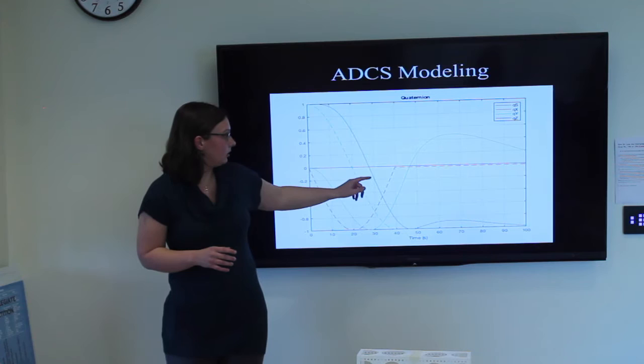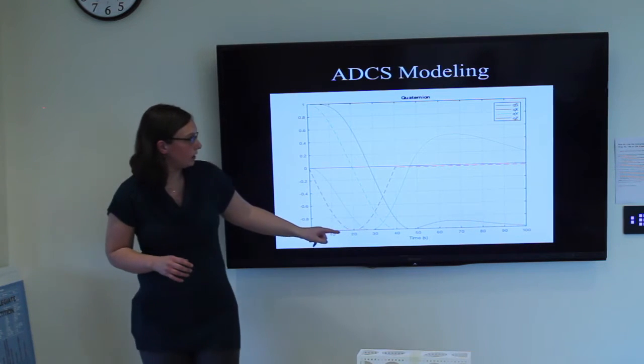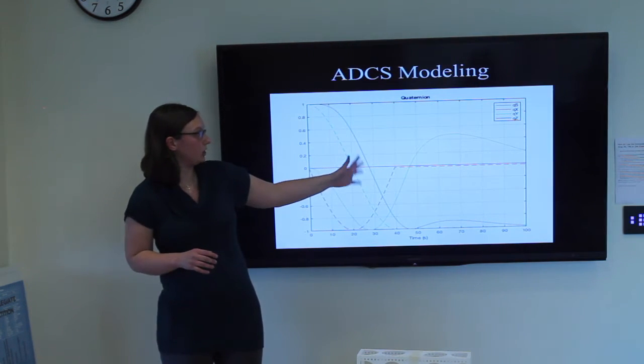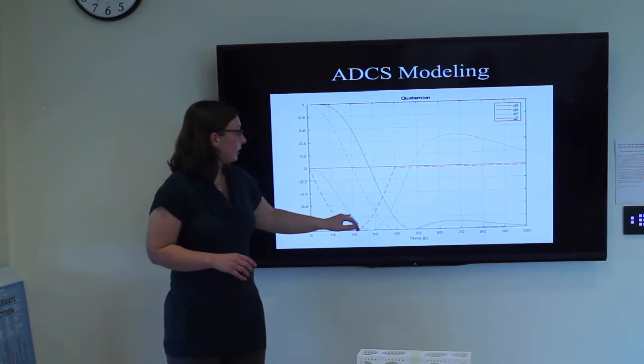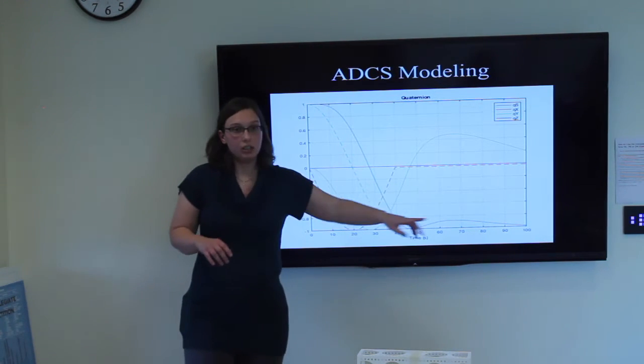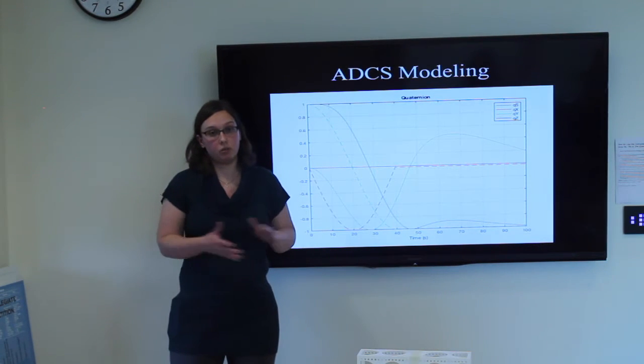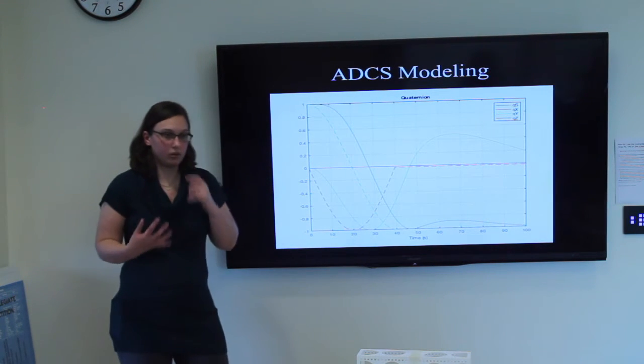So this is what this is showing. We've got several lines, several parts showing attitude control, determination, and placement about the X, Y, and Z as well as S. Now S is just an imaginary constant as a part of quaternions.